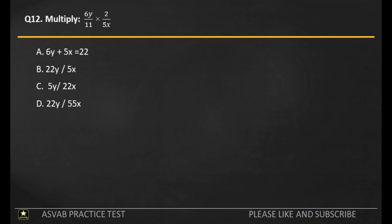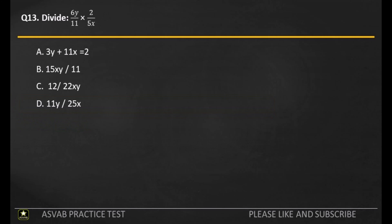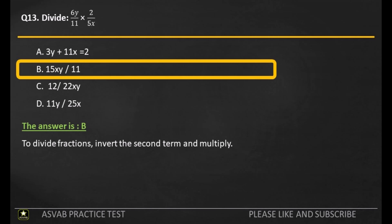Q12. Multiply. A. B. C. D. The answer is D. To multiply fractions, multiply the numerators and denominators. Q13. Divide. A. B. C. D. The answer is B. To divide fractions, invert the second term and multiply.